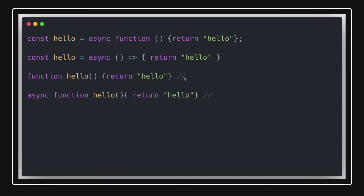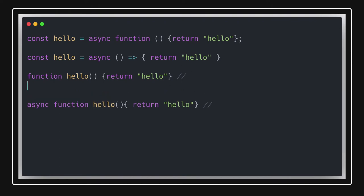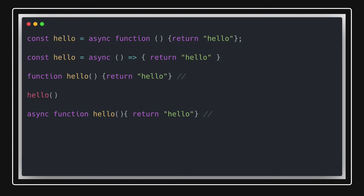The basic difference is that a normal function returns a plain value, while an async function returns a promise. Whenever you write a function as async, that function will always return a promise. If you want to get the data from it when calling it, you have to use `.then()` to capture the value.